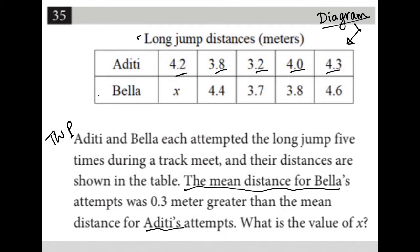If you remember, we find the mean by just adding up all the values and then dividing by the number of values we have. So I'm gonna go to my calculator, add up 4.2 plus 3.8 plus 3.2 plus 4.0 plus 4.3. That's equal to 19.5 divided by five because there's five attempts there. So divide by five and I get 3.9. So there is the average for Aditi, 3.9.